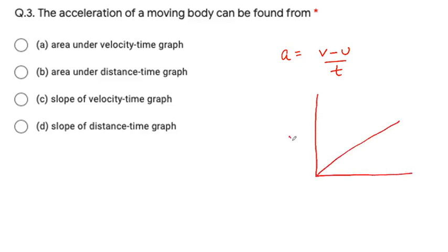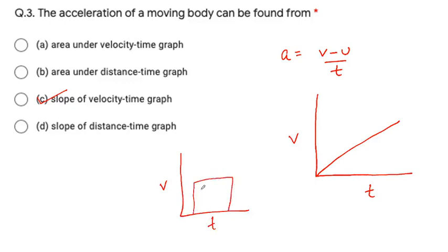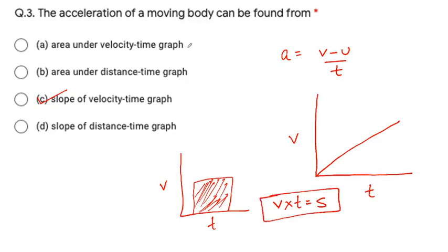The next question is: the acceleration of a moving body can be found from what? Acceleration is the rate of change of velocity. We can find the value of acceleration from a velocity-time graph. By finding the slope of the v-t graph, we can find the value of acceleration. So the correct option is the slope of the velocity-time graph, which gives acceleration.